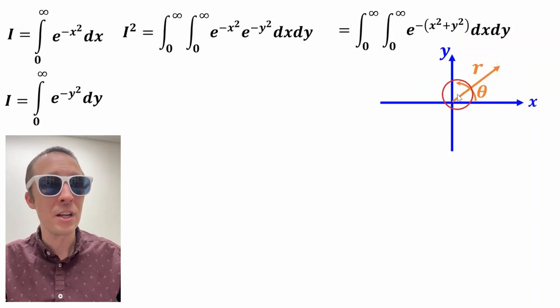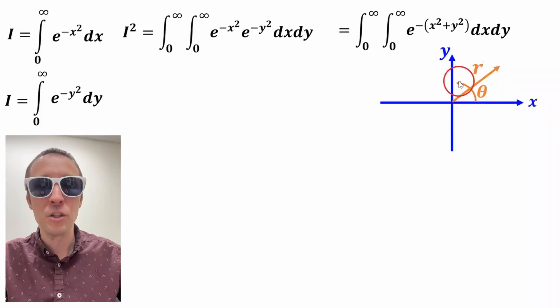So in terms of polar coordinates, r will go from zero to infinity. And theta is within this quadrant one. So zero to pi over two, which is 90 degrees.